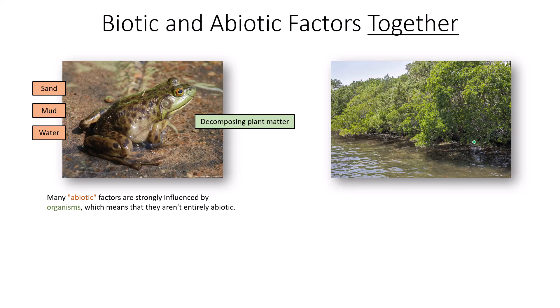This bullfrog is influenced by many abiotic factors: sand, mud, and water. But the muck made from those abiotic factors also houses decomposing plant matter — which, though currently dead, was once alive and is considered a biotic factor. There's also algae, bacteria, and fungi in that pond muck. Together, those six biotic and abiotic factors create the muck the frog is attracted to, which maintains skin moisture and provides its habitat.